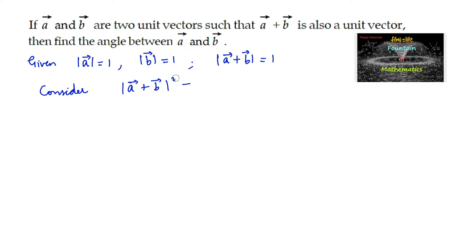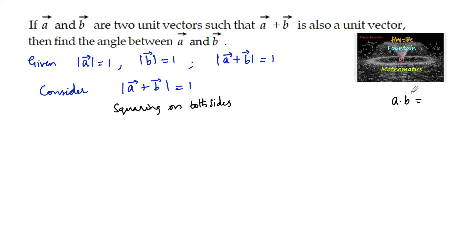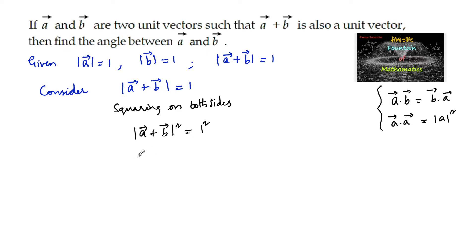Consider mod of a plus b is equal to 1, and squaring on both sides. By using the properties — a dot b is equal to b dot a, and a dot a is equal to mod a squared — by using these properties we can write: mod a squared plus mod b squared plus 2 times of a dot b, which is equal to 1.